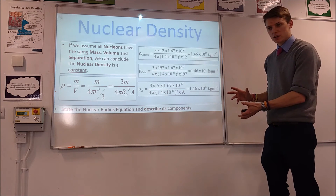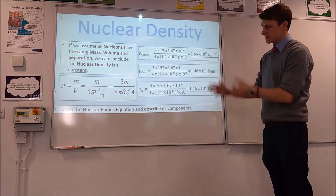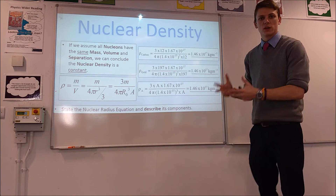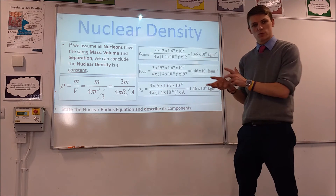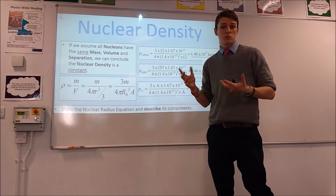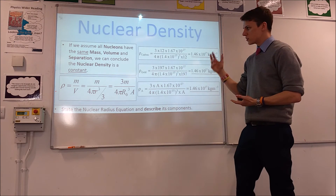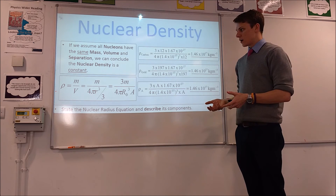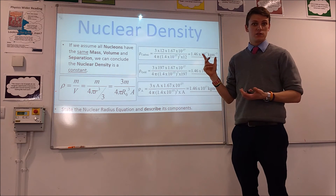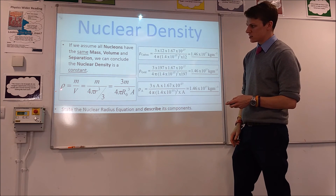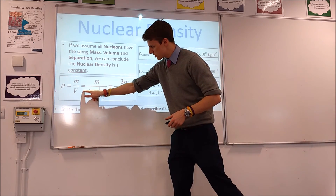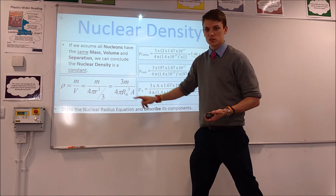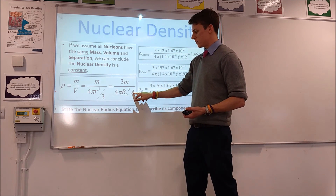The last thing we can look at is how this relates to nuclear density. If we assume all nucleons have the same mass and the same kind of size — so the same volume — we know they will all have the same density. And if we assume the separation between nucleons is consistent, which you'd expect because they're all acted on by the same strong force, then we can conclude that nuclear density is in fact constant — every nucleus has the same density. To calculate density, we divide mass by volume, and if we assume the nucleus is a sphere, we can substitute in the equation from the previous slide. When we cube the radius, we end up with R₀ cubed times A.